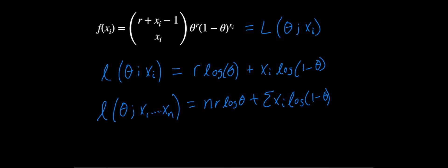So, d d theta, the log-likelihood of theta given x 1 through x n, is n r over theta.